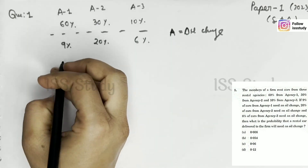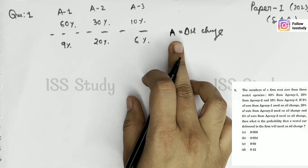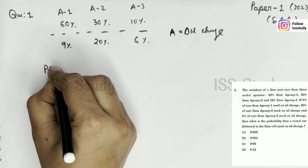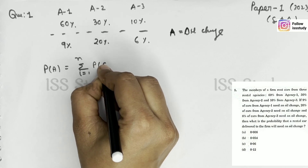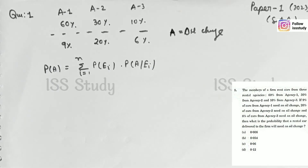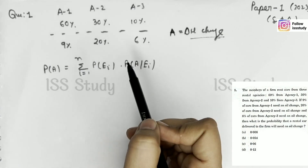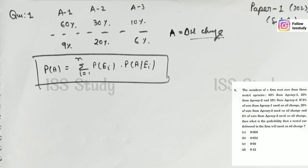So directly I'm going to write down the formula. If A is any event which is associated with the rest of the events, then according to the total probability theorem, probability of A is always given as: summation i going from 1 to N of probability of Ei into probability of A given Ei. Because this term oil change is associated with agency 1, agency 2, and agency 3. So using this formula we are able to find the probability asked in the question.